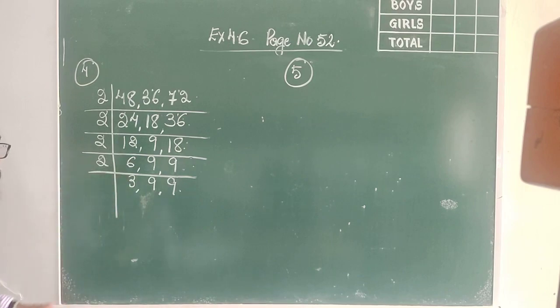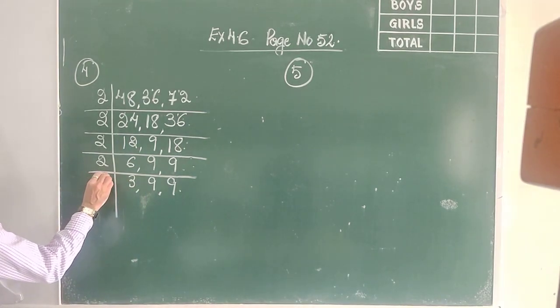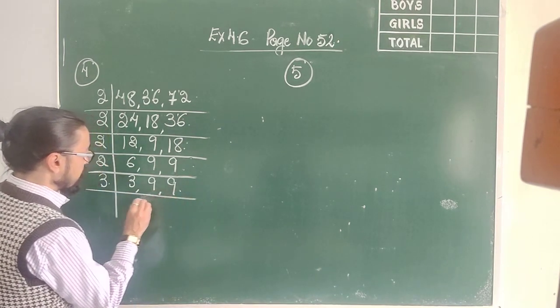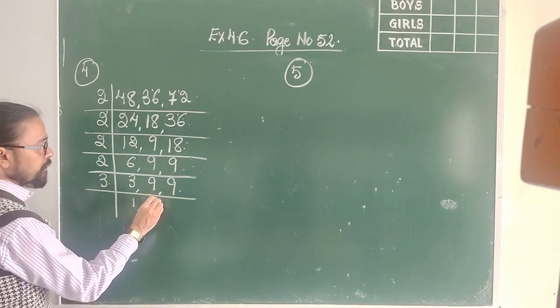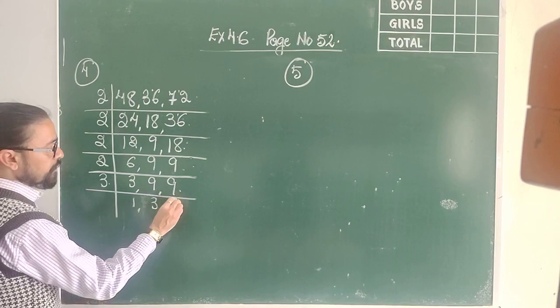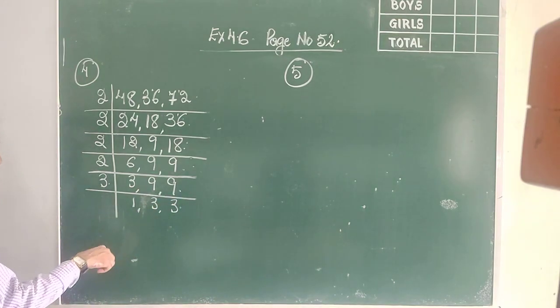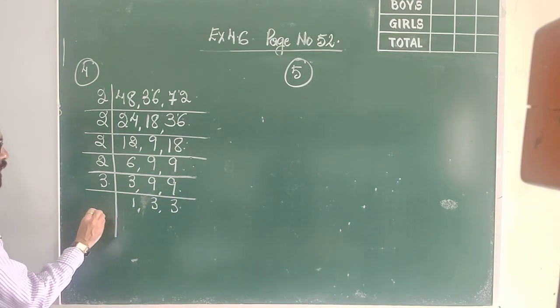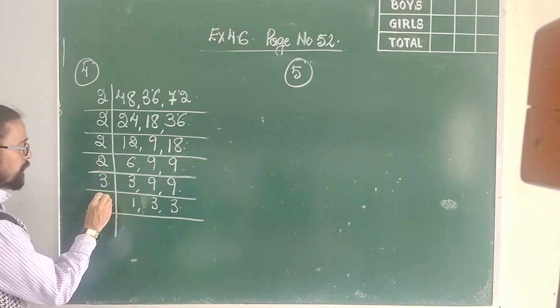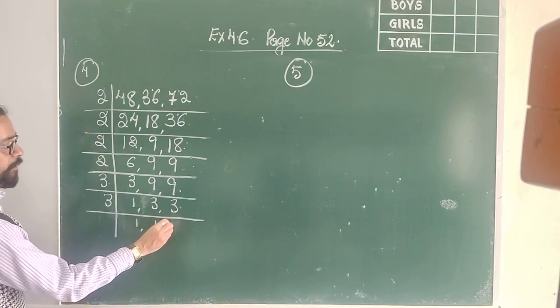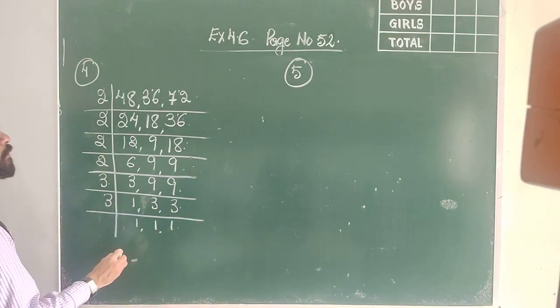The next prime number is 3. So: 3 ones are 3, 3 threes are 9, 3 threes are 9. I have got 1 already, which will go to the end of this answer. Again by 3, and I get 1, 1, 1.